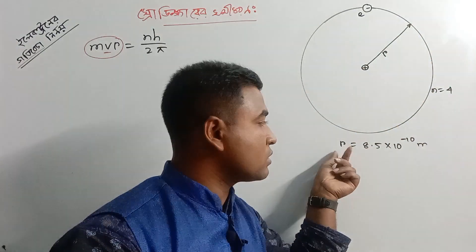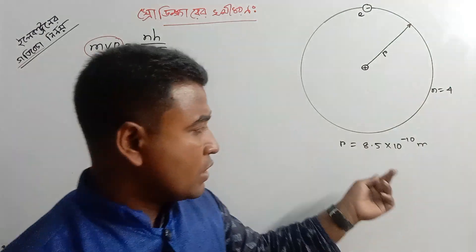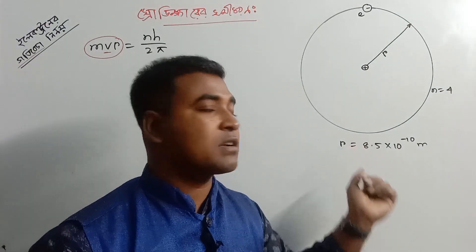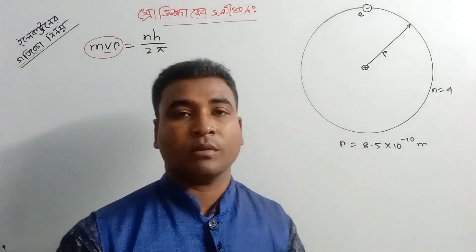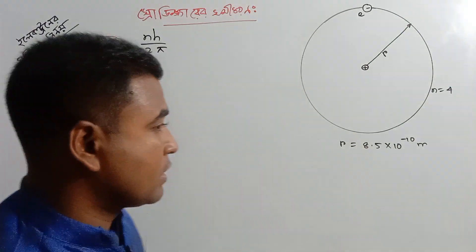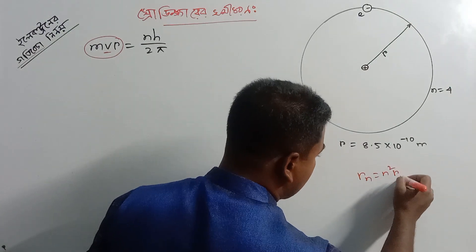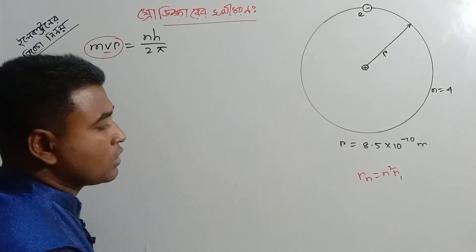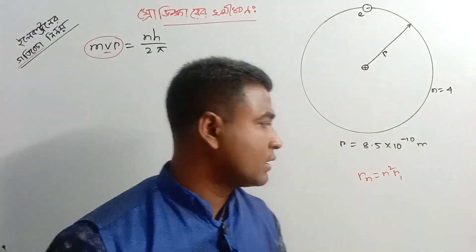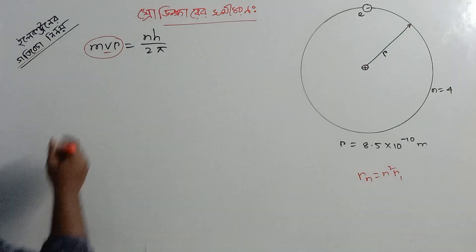R plus R is about 8.5 into 10 to the power minus 10 meter. When you see the SSE level, you see the Rn value. The Rn value is equal to n squared times R. So Rn = n²R.